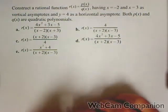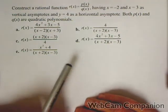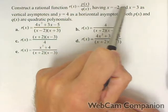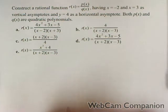In this video, we're going to build a rational function given some characteristics. We're told that it has x equals negative 2 and x equals 3 as vertical asymptotes.